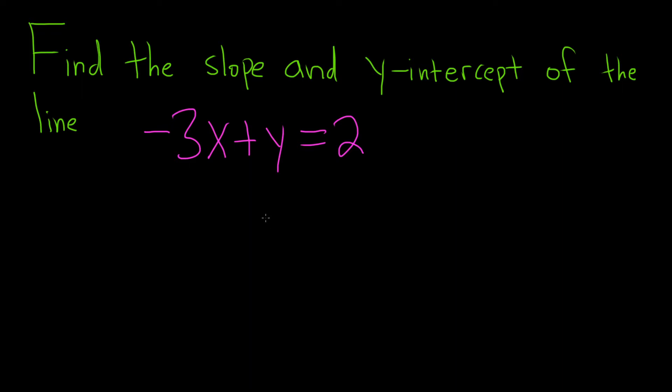Find the slope and y-intercept of the line -3x + y = 2. Solution: The first thing we have to do is put this in the form y equals mx plus b. So that's our goal.